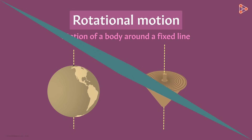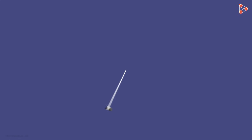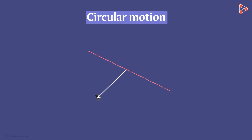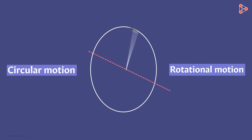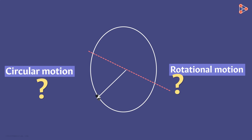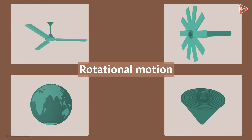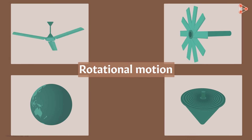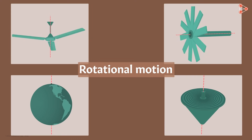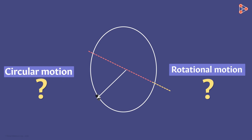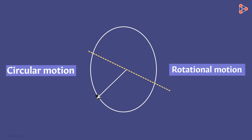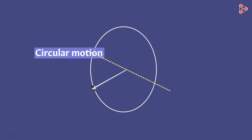Let's go back to our earlier example. When this object was whirled around in circles, we said it was performing circular motion. But if we take this line as our axis of rotation, we could also say the object is performing rotational motion around this fixed line. So what exactly is the difference? In all examples of rotational motion, the axis of rotation passes through the object. But in circular motion, the axis of rotation is not passing through the object — it is totally separate. Hence, we don't call this rotational motion; this is circular motion.